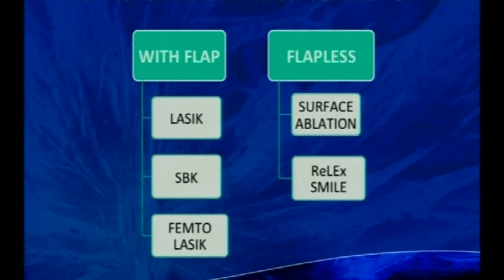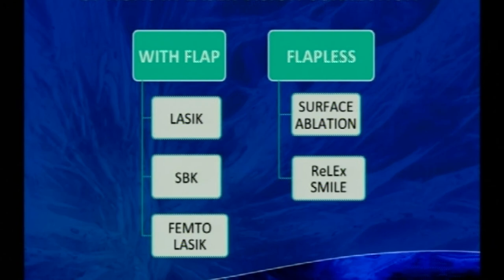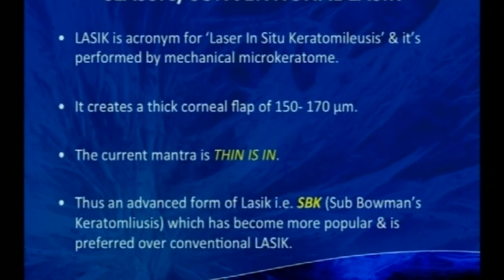Flap procedures include: conventional LASIK, thin-flap LASIK (sub-Bowman's keratomileusis, SBK), and femtosecond LASIK. Flapless procedures include surface ablation in the form of PRK, advanced surface ablation (LASIK, LASEK, PTK, trans-PRK), and SMILE. Conventional LASIK created thick flaps of 150–170 microns — that era is over. 'Thin is in' — SBK creates flaps of 100–110 microns, combining the advantages of LASIK and decreasing the disadvantages of surface ablation like haze and regression.